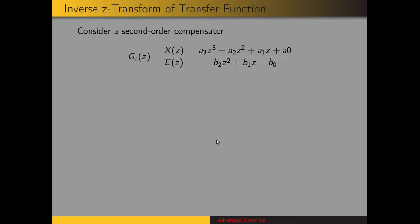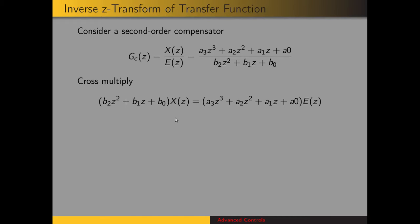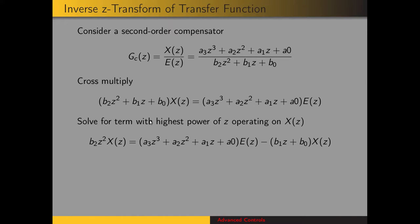Let's look at the transfer function for a second-order compensator. We have a third-order polynomial in the numerator and a second-order polynomial in the denominator, so the characteristic equation would be second order. The coefficients are a3 with z^3 in the numerator, a2 in the numerator, b2 with z-squared in the denominator, etc. We're going to cross multiply and get an expression, then solve for the term with the highest power of z operating on X of z.